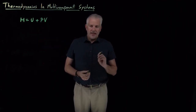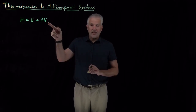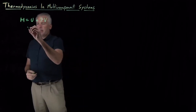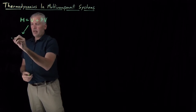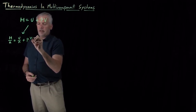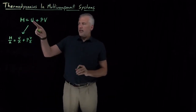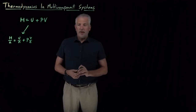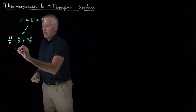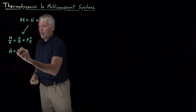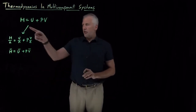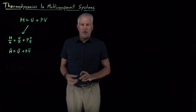Where we have to think carefully is when we use the intensive versions of those expressions. This is an extensive equation: total enthalpy is total energy plus pressure times total volume. If I want to write down the intensive version, I divide by number of moles on each side — H over N, U over N, V over N — and write this as: molar enthalpy equals molar internal energy plus pressure times molar volume. I've just converted all the extensive properties into intensive properties.